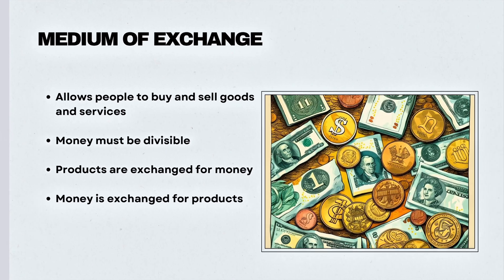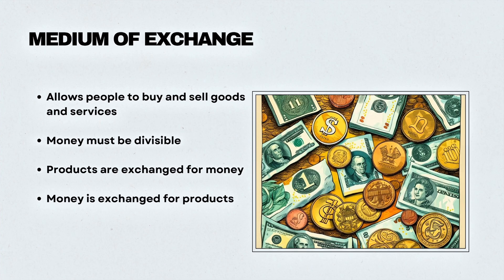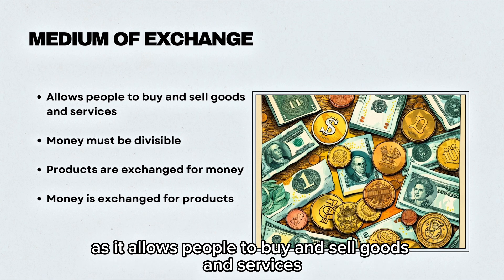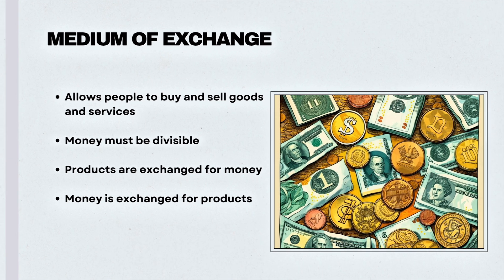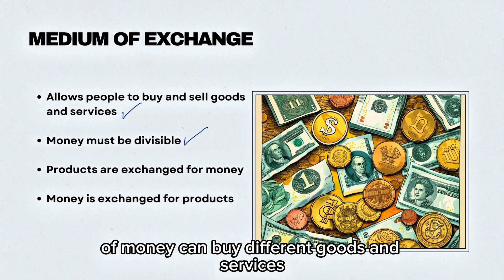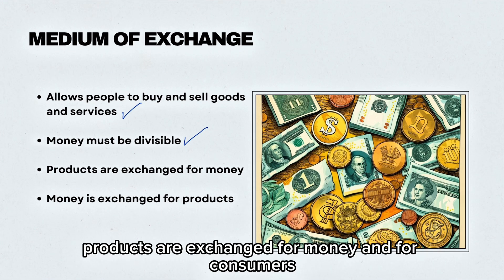Moving on to the functions of money. Money acts as a medium of exchange as it allows people to buy and sell goods and services. Money has to be divisible as different quantities of money can buy different goods and services, and for firms products are exchanged for money.